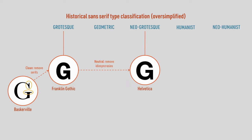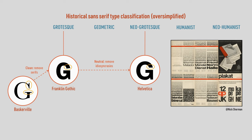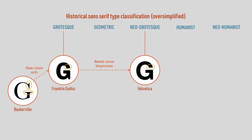Neo-grotesque fonts came next. They ironed out the irregularities and inconsistencies found in many grotesque fonts, creating a more rational design. So where a grotesque uppercase G might have an angled terminal, a corresponding neo-grotesque terminal would typically be horizontal. Since they weren't as idiosyncratic as grotesque fonts, neo-grotesque fonts could be used comfortably in body text, in addition to being used for display purposes.